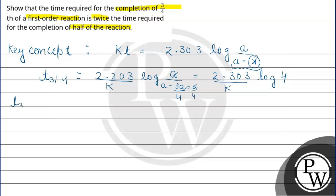So t3/4 is 2.303/K log 4. We can write this as 2.303/K log 2². Now there is a property that log of N^n is n log N.